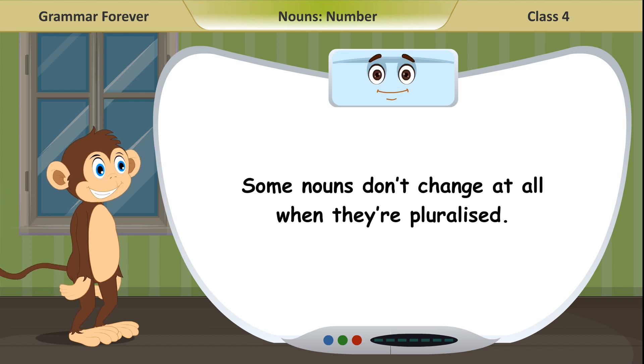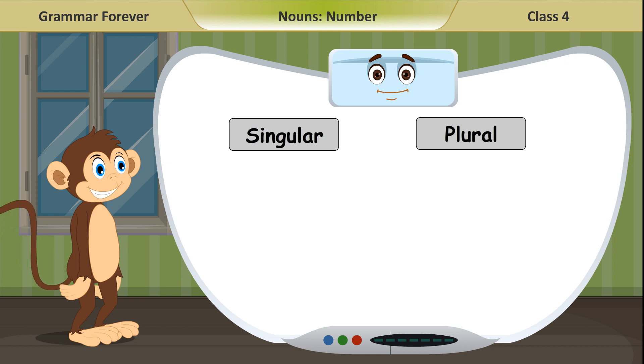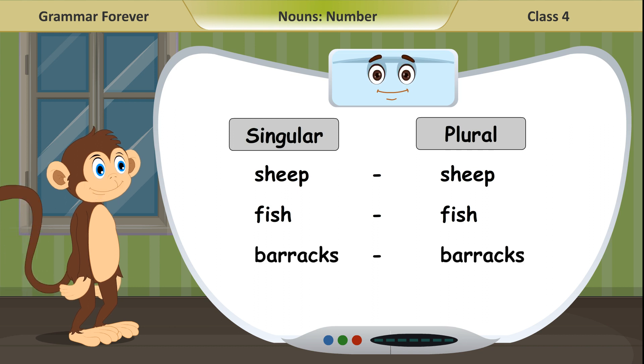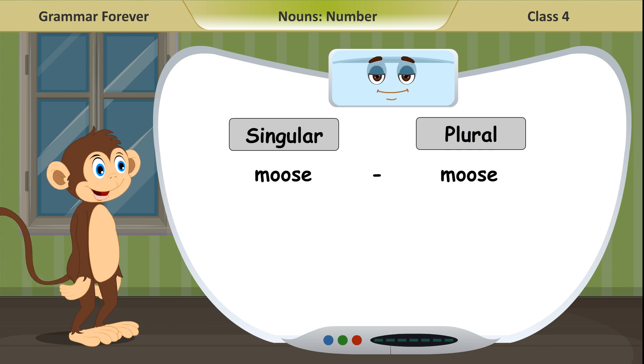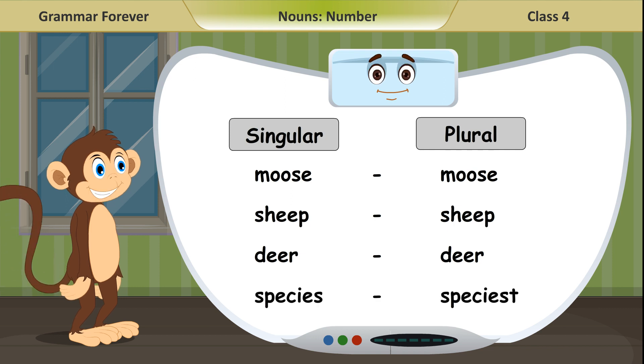Some nouns don't change at all when they're pluralized. Singular, plural: Sheep, sheep. Fish, fish. Barracks, barracks. Series, series. Moose, moose. Deer, deer. Species, species.